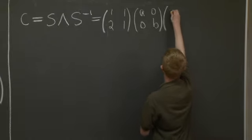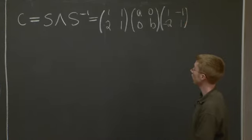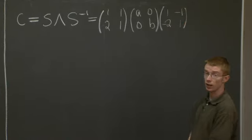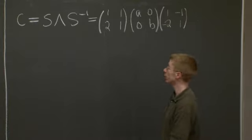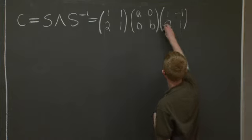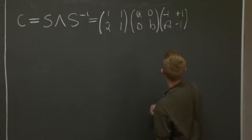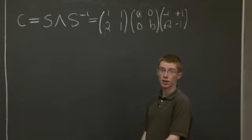So we just take negative signs here, and recall that we have to divide by 1 over, or we have to divide by the determinant, and the determinant of this matrix is just negative 1. So we just change the signs there. Good, so this is our nice decomposition of C.